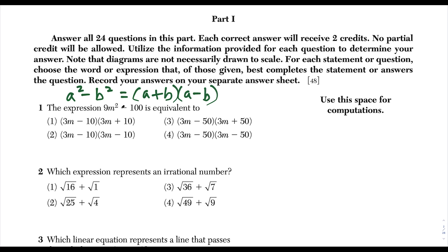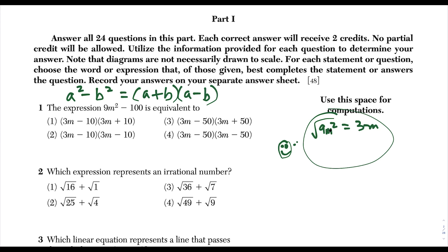I'm looking at the first term 9m squared and I take the square root of it. The square root of 9 is 3, and the square root of m squared is m. Then we take the square root of 100, which is 10 since 10 times 10 is 100. To factor this, we're doing the square root of the first term plus or minus the square root of the second term.